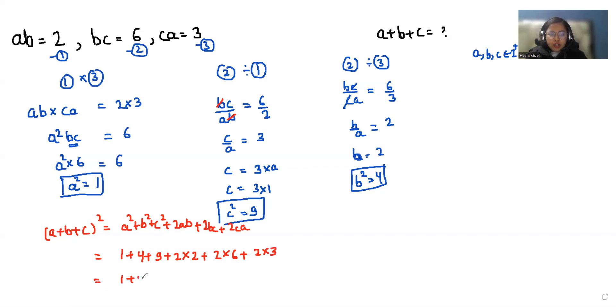So 1 plus 4 plus 9 plus 2 times 2 is 4, 2 times 6 is 12, plus 2 times 3 is 6. So 1 plus 4 plus 9 is 14. And 4 plus 12 is 16, plus 6 is 22. And 14 plus 22 is 36.